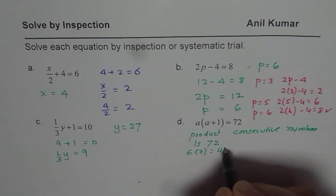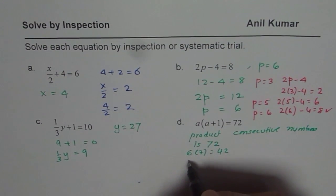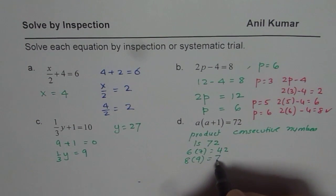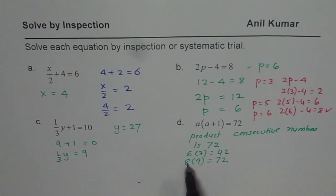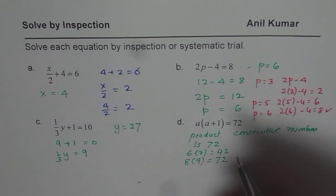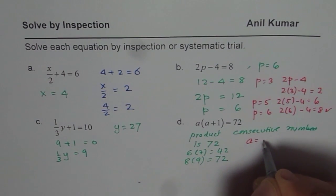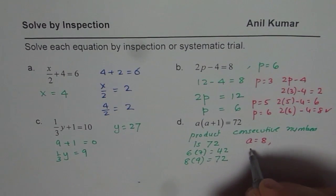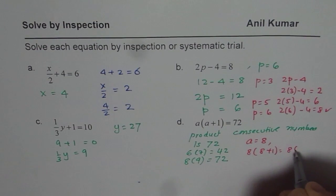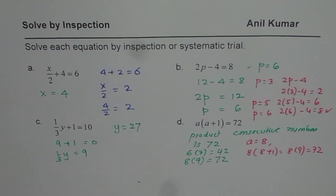So we jump to the answer, that is 72. So we know 72 is 8 times 9, and so a should be 8. So we get our solution, and the solution here is a equals to 8. In that case, 8 times 8 plus 1 is 8 times 9, and that is 72. So we could get the answer by inspection.